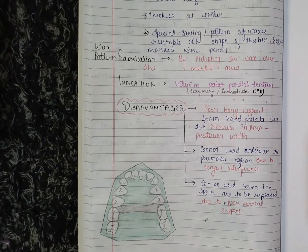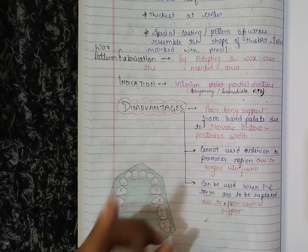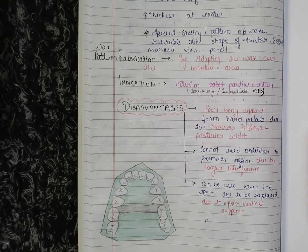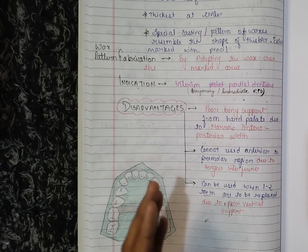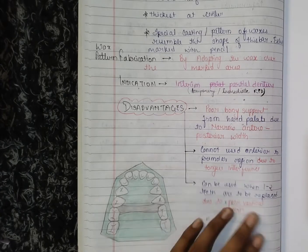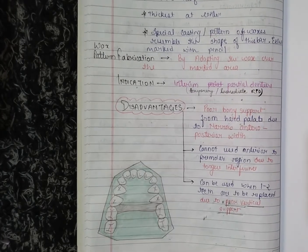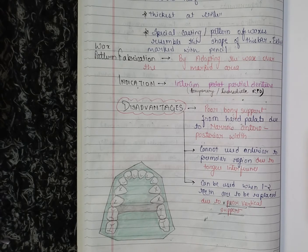Now the disadvantages — there are three. First, it provides poor bony support from the hard palate due to its narrow anterior-posterior width, since it is narrow half oval in cross-section. Second, it cannot be used anterior to the premolar region due to tongue interference. Third, it can only be used when one or two teeth are to be replaced, due to poor vertical support.